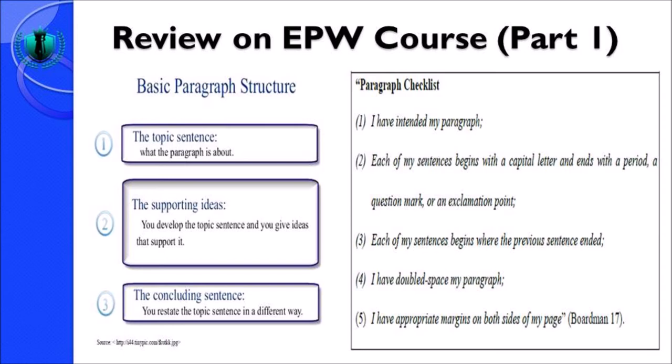The last item in the review is the paragraph checklist. You need to follow five items when you check your paragraph: first, I have indented my paragraph; second, each of my sentences begins with a capital letter and ends with a period, a question mark, or an exclamation point; third, each of my sentences begins where the previous sentence ended; fourth, I have double-spaced my paragraph; and fifth, I have appropriate markings on both sides of my page. (Boardman, page 17.)